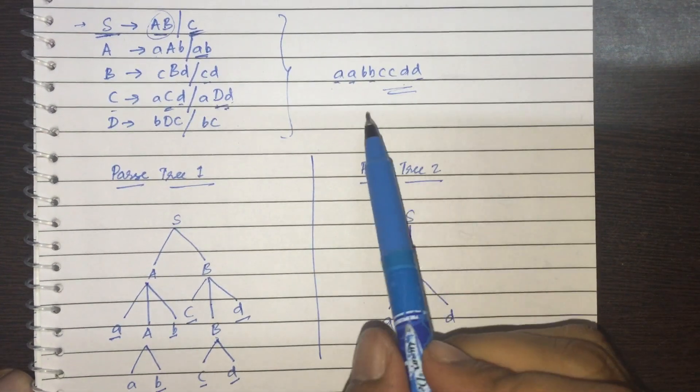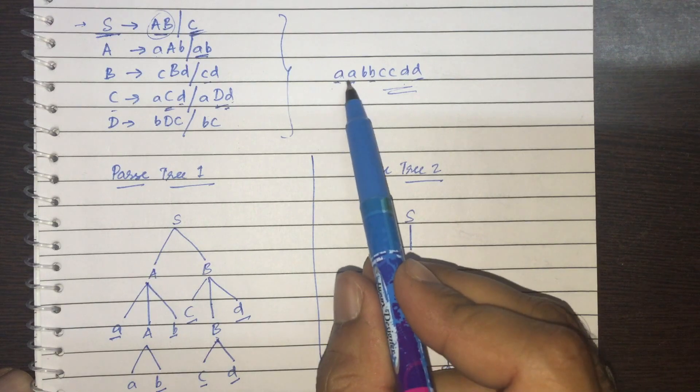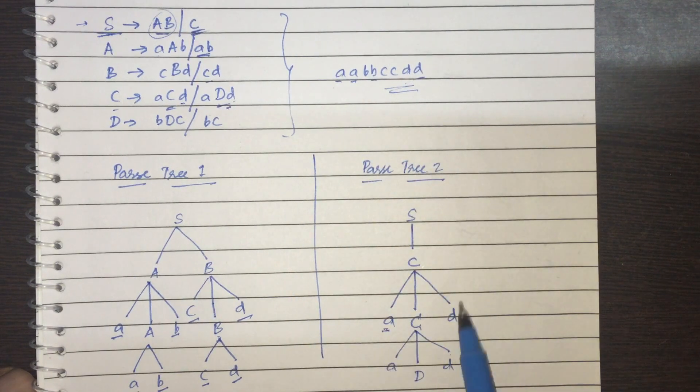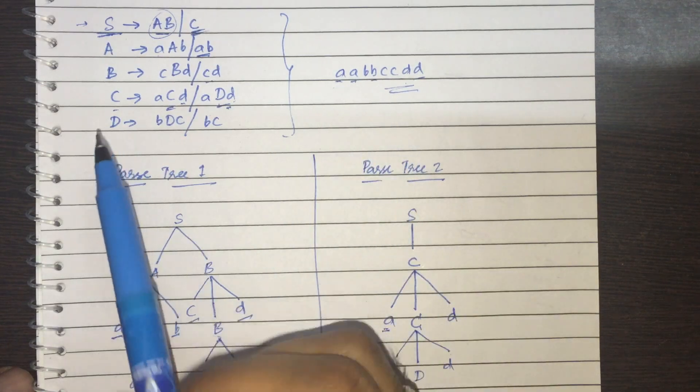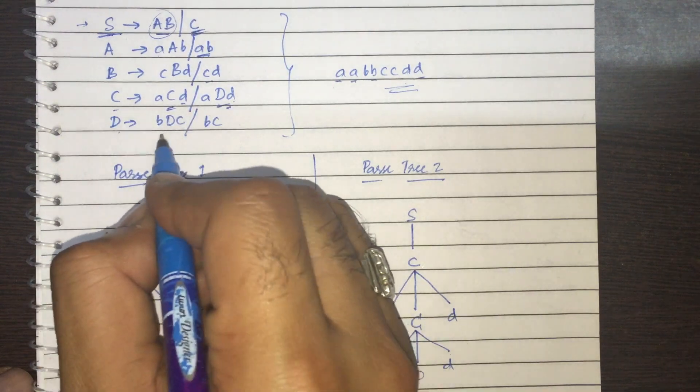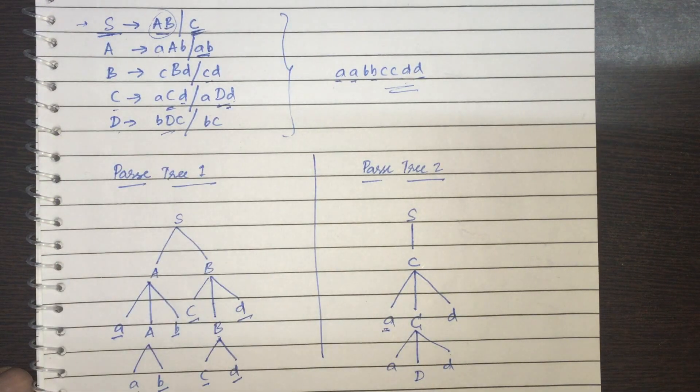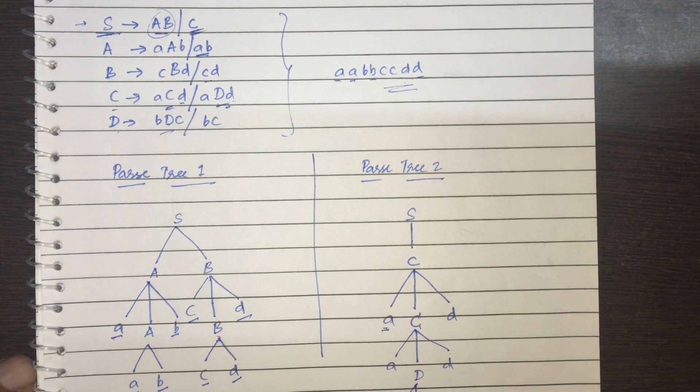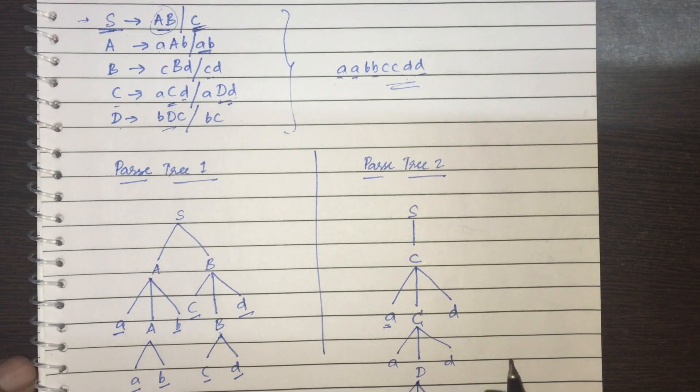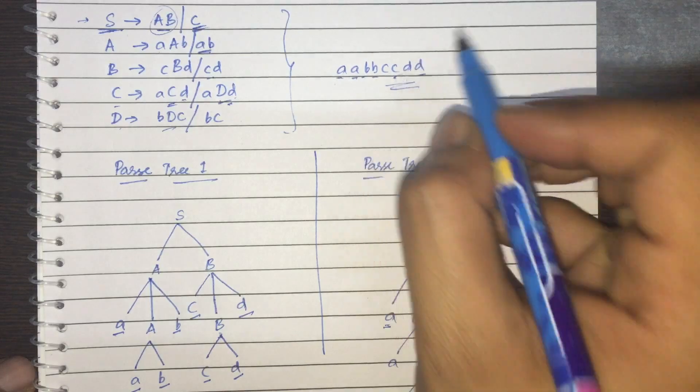So if you see my resulting string and what I've got here is, now I've got AA and DD is there. Now I have got D. I need to get B, B and C, C. So I take this production and then I go for B, D, C. I get B, I get D, I get C. I got this B and this C.